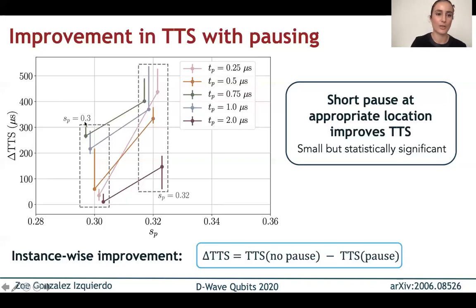We have several pause durations between 0.25 and 2 microseconds. And then we have two pause locations at 0.3 and 0.32. The data points are just staggered for readability, but these all correspond to 0.3 and these all correspond to 0.32. And what we see is that they are all above zero, meaning that in more than half of the instances, we see an improvement by using a pause. So this is good. We find that a short pause at an appropriate location will improve TTS.